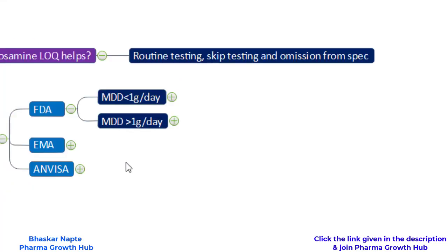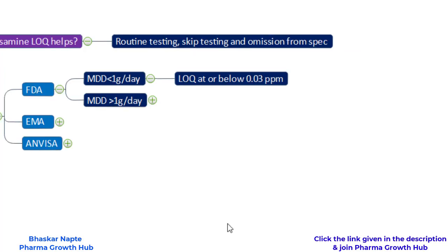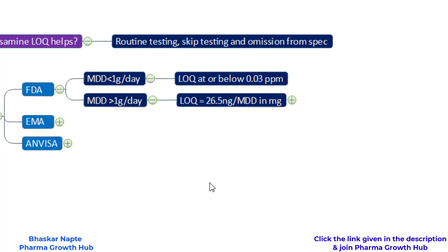According to FDA, the maximum daily dose (MDD) is the defining parameter. If your MDD is less than one gram per day, then the LOQ at or below 0.03 ppm is the requirement. If the MDD is greater than one gram per day, then your LOQ should be at least equal to 26.5 nanogram divided by MDD. The 26.5 nanogram is used because NDMA has the least limit among nitrosamines specified in FDA's guideline.